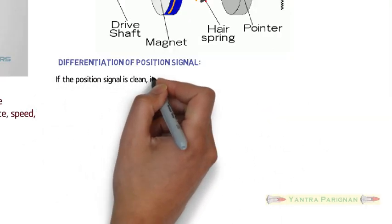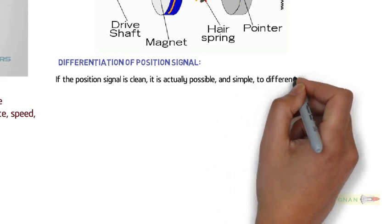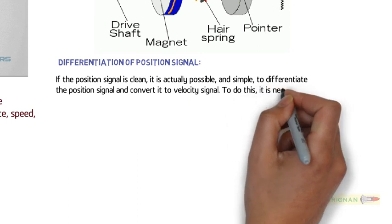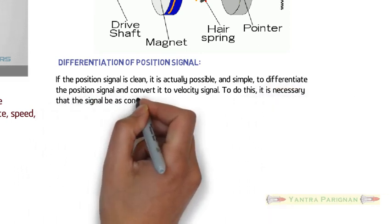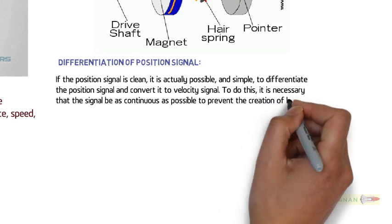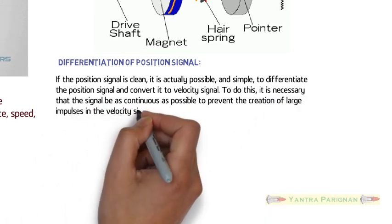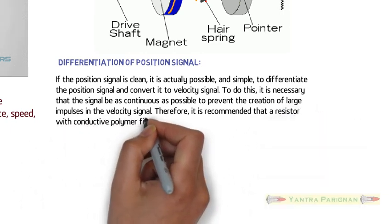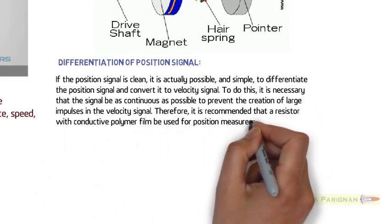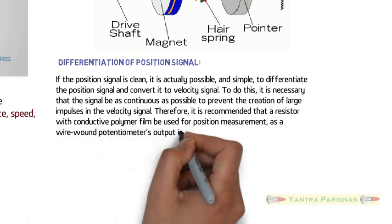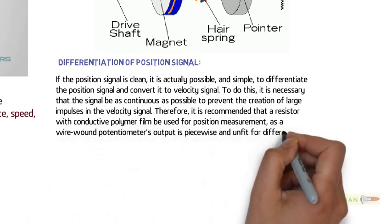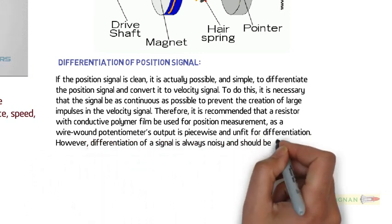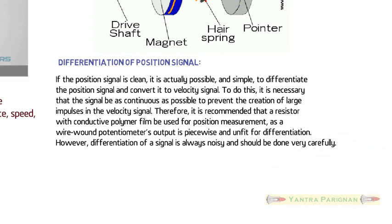Differentiation of position signal. If the position signal is clean, it is actually possible and simple to differentiate the position signal and convert it to velocity signal. To do this, it is necessary that the signal be as continuous as possible to prevent the creation of large impulses in the velocity signal. Therefore, it is recommended that a resistor with conductive polymer film be used for position measurement, as a wire wound potentiometer's output is piecewise and unfit for differentiation. However, differentiation of a signal is always noisy and should be done very carefully.